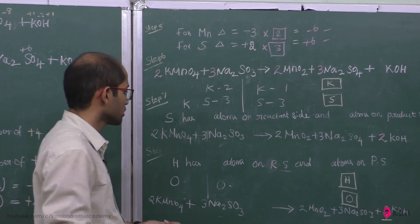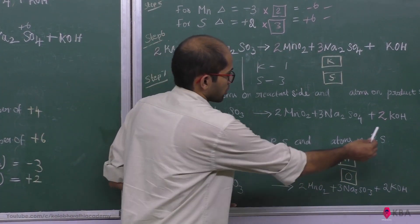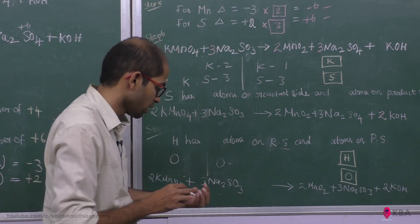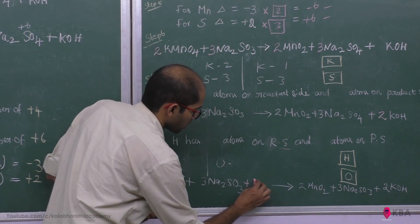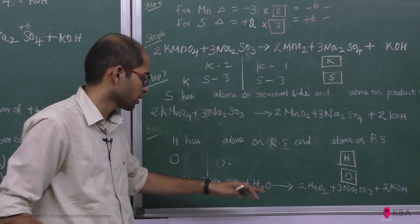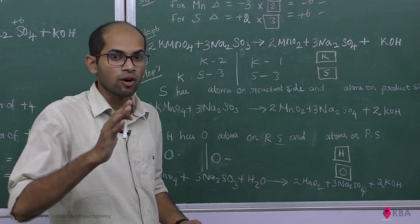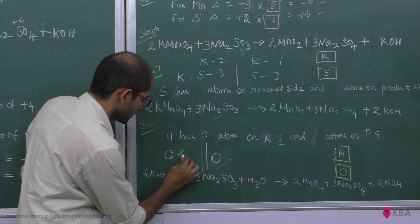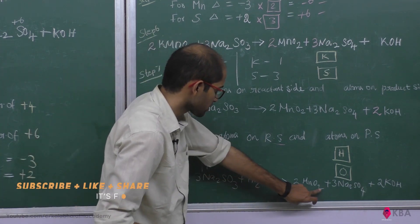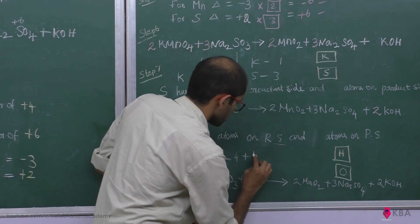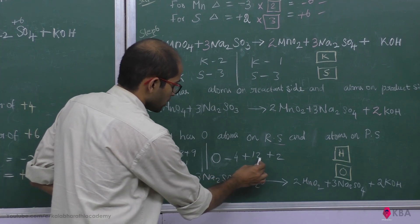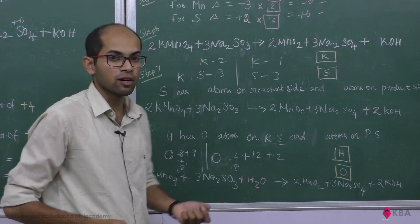Next step: balance hydrogen and oxygen. For hydrogen: there are 2 hydrogens on the product side in 2 KOH, and none on the reactant side, so we add H2O to balance. On the reactant side, hydrogen is balanced by adding water. For oxygen: reactant side has 8 oxygens and product side has 9 oxygens — counting carefully: product side totals 12 plus 12 giving 18, reactant side also totals 16, 17, 18. Hydrogen is balanced, and oxygen is automatically balanced.